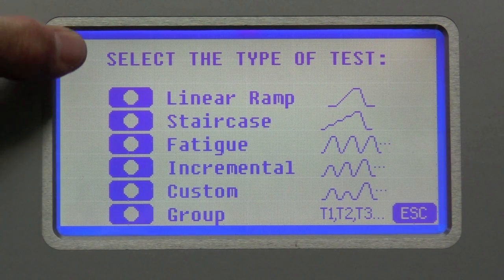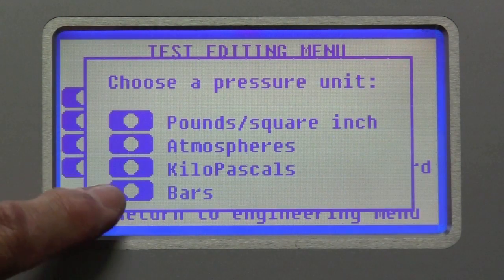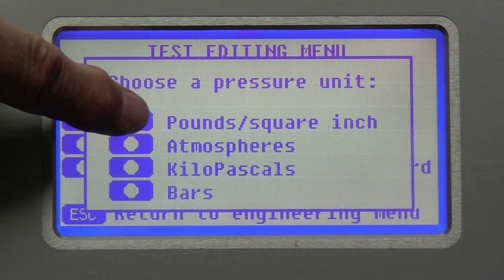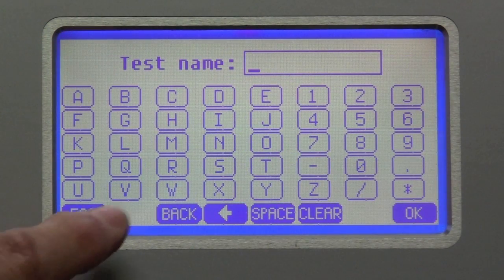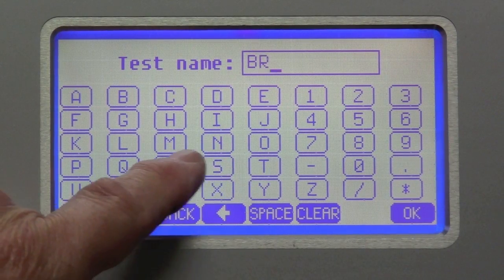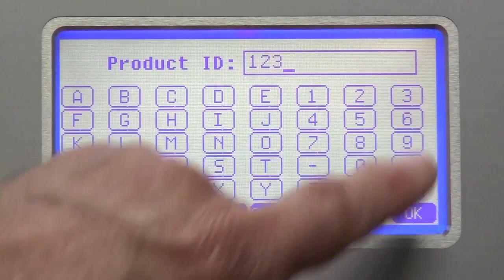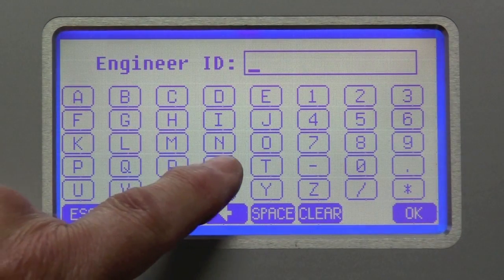We're going to do a burst test, so we're going to use a linear ramp. Here we choose the engineering unit. In this case, I'm going to choose pounds per square inch. And I'm going to call the test a burst test. And I'm just going to abbreviate it. Product ID, I'm going to call 123. Engineer is me.